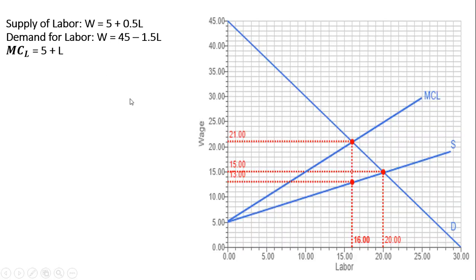So we want to get the deadweight loss. Just writing our key results here, or our key equations, I should say. And what I'm going to do is I'm just going to graph these three equations. So let's start with the demand for labor. It has a vertical intercept of 45.